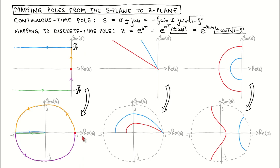We have seen how the edge of the stable region that can be represented as discrete time poles is mapped from the s-plane to the z-plane. Let's now look at how poles are mapped within this region. A complex continuous time pole can be written as minus zeta times omega_n plus or minus j*omega_n times the square root of one minus zeta squared, where zeta is the damping and omega_n is the natural frequency. When this description of the pole is mapped to the z-plane, we get this full description.